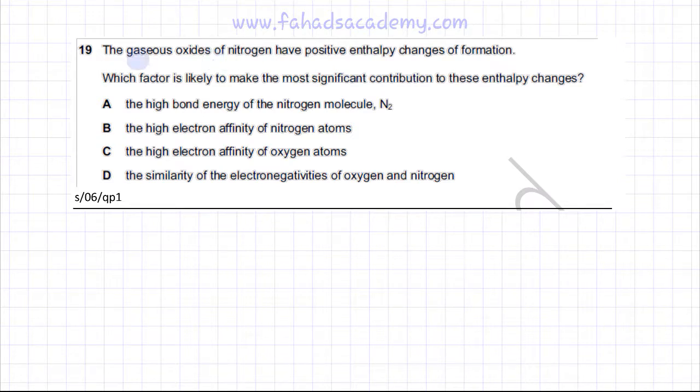So he's talking about the gaseous oxides of nitrogen. There are two common gaseous oxides: one is NO₂ and the other one is nitrogen monoxide. So nitrogen dioxide and nitrogen monoxide - a couple of other gaseous oxides are formed as well. So he's saying that they have positive enthalpy changes of formation.